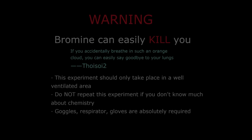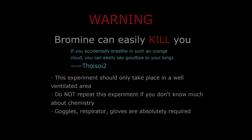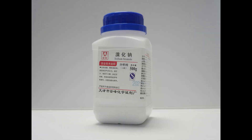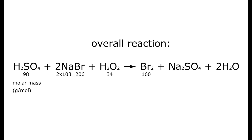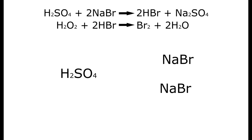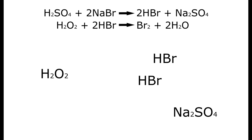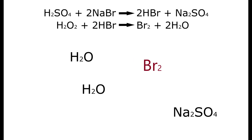Without further ado, let's get into the synthesis. The chemicals you need for the reaction are sulfuric acid, a soluble bromide salt — for me it's sodium bromide — and hydrogen peroxide. The reaction carried out is an oxidation reaction. The sulfuric acid first reacts with the bromide salt to form hydrogen bromide, then the hydrogen peroxide oxidizes the HBr, forming elemental bromine.